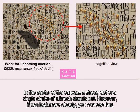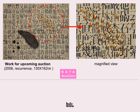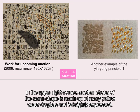In the centre of the canvas, a strong dot or a single stroke of a brush stands out. However, if you look more closely, you can see that there is another dot of the same shape above it. In the lower left corner, there is one stroke made by pressing with black ink. In the upper right corner, another stroke of the same shape is made up of many yellow water droplets and is brightly expressed.